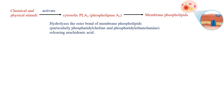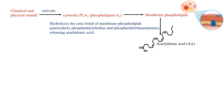Arachidonic acid is the main character in our story — it is held captive in the cell membranes. Phospholipase A2, being the superhero, breaks the ester bonds of the membrane phospholipids, especially phosphatidylcholine and phosphatidylethanolamine, and releases arachidonic acid from the cell membrane. Now arachidonic acid is free to act.